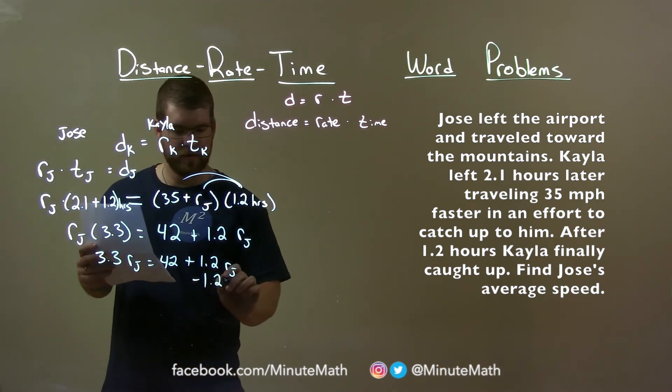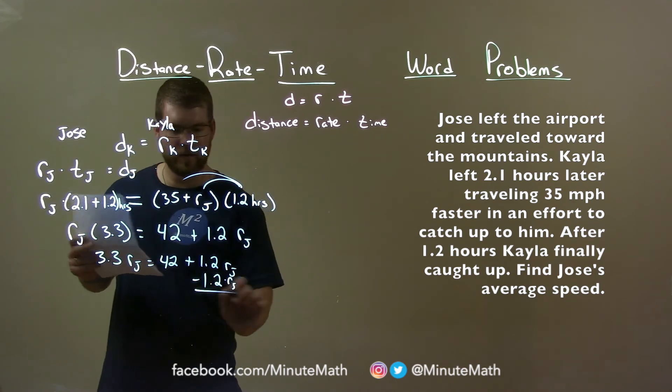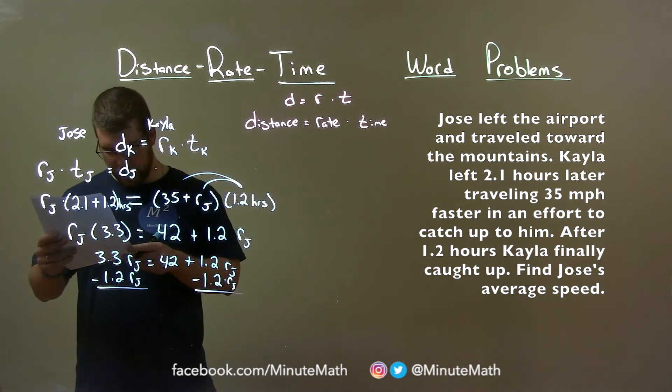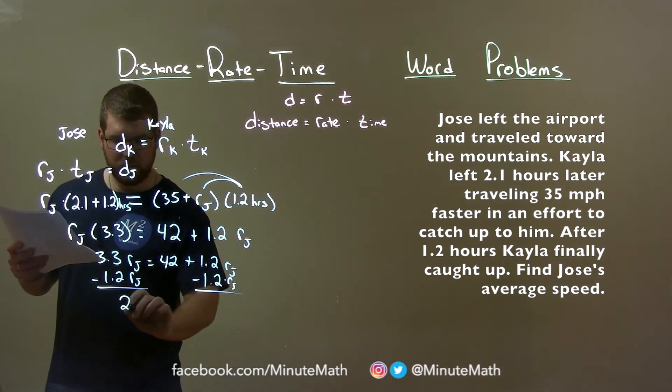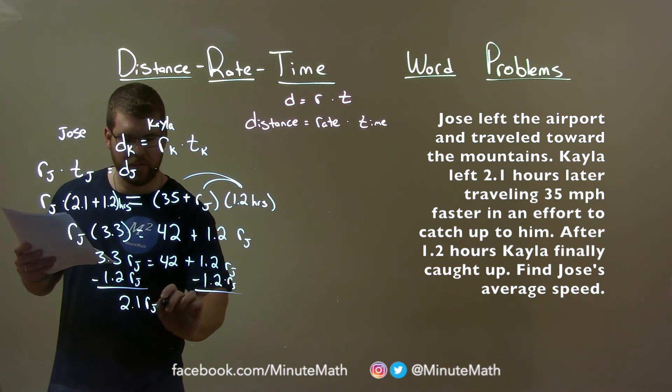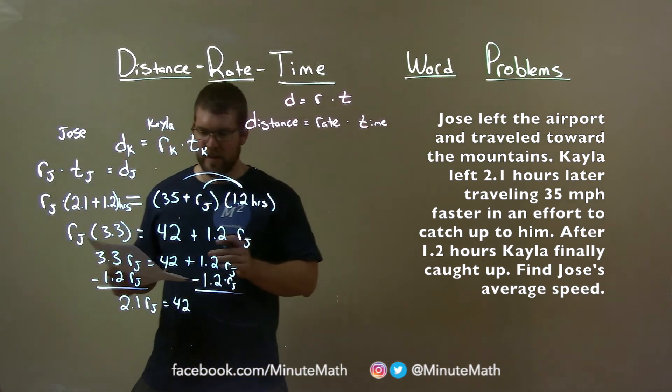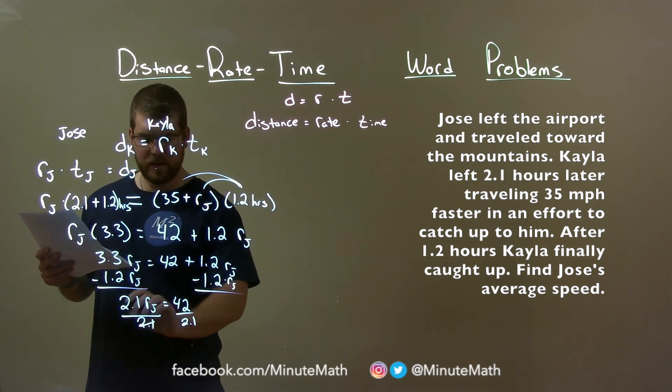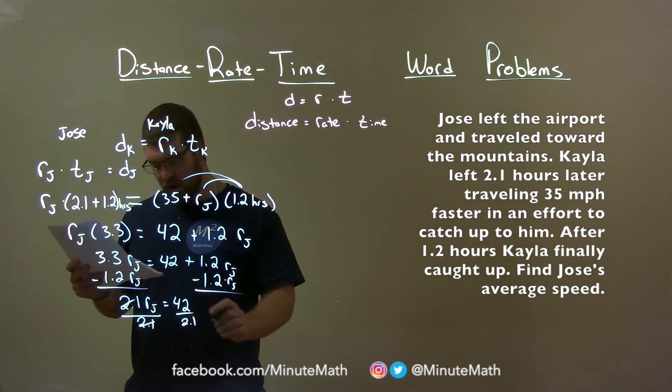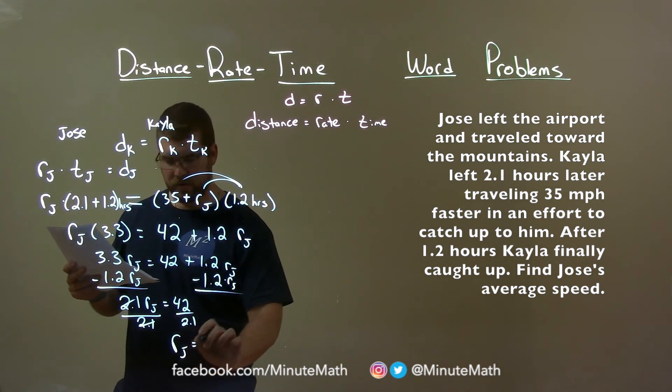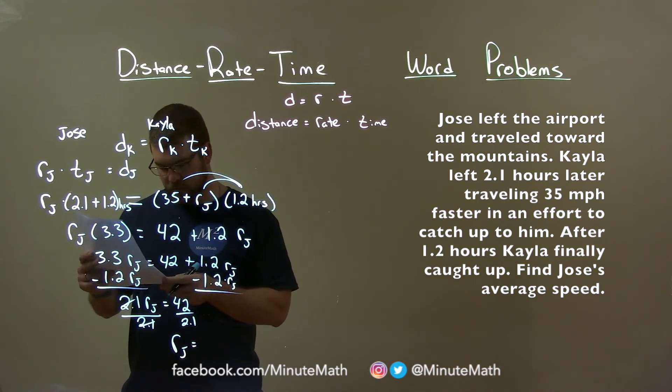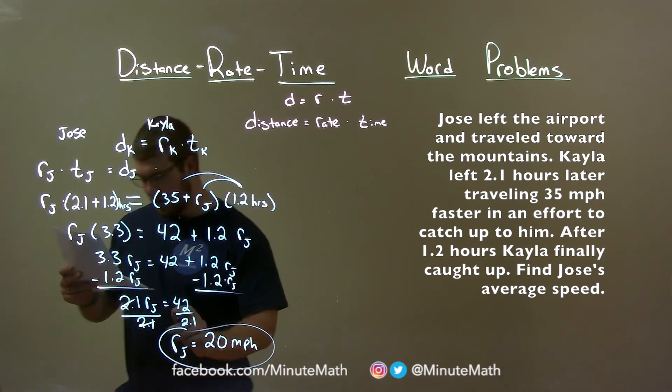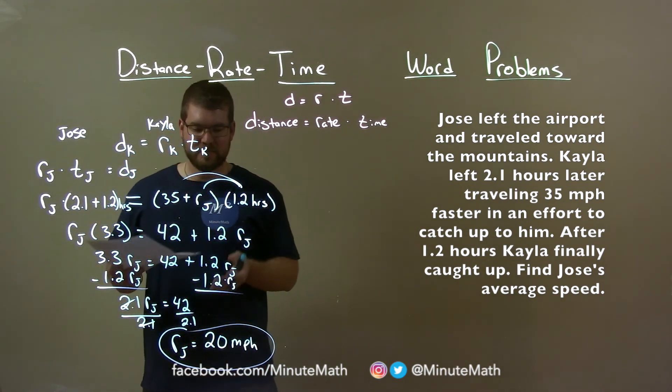I'm going to subtract 1.2 times RJ from both sides. 3.3 minus 1.2 comes out to be 2.1 RJ, equal to 42. Then I need to divide by 2.1 on both sides, and that 2.1 cancels, giving me RJ by itself. 42 divided by 2.1 is 20. So we have 20 miles per hour, and that is Josie's average speed.